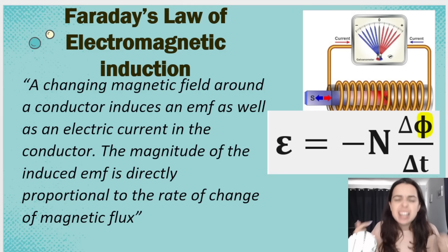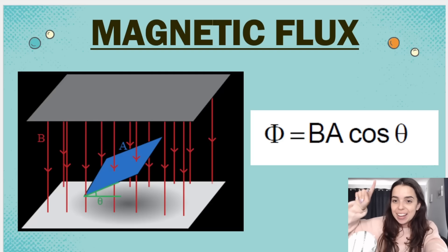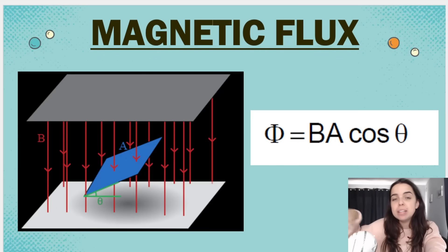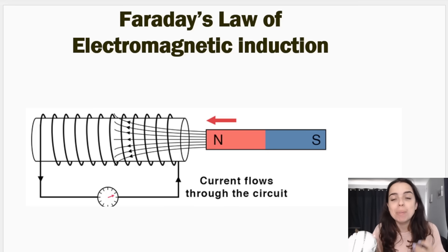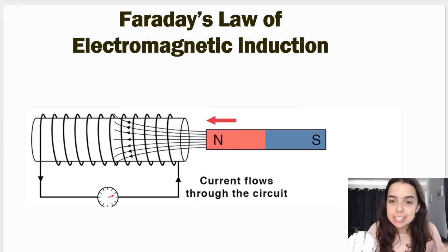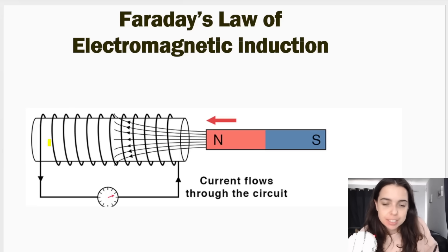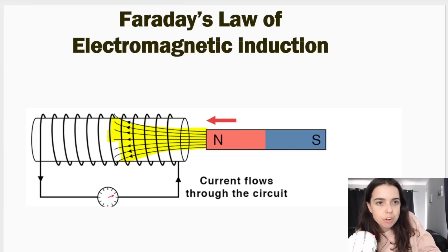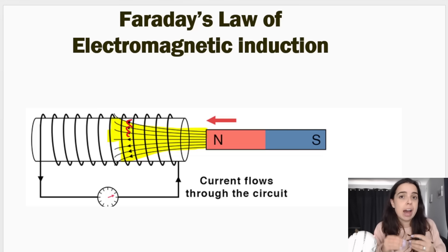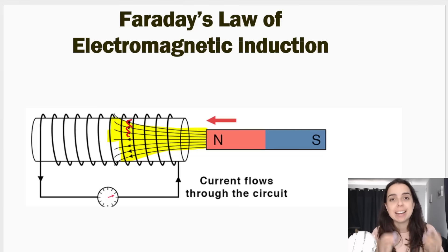So we will go over what magnetic flux is and how to calculate it, which will ultimately allow us to calculate induced EMF. First, the definition. If I have a bar magnet, a magnetic field exists around it. We can see these magnetic field lines, and you can see the arrows pointing away from the north pole. So remember, around a bar magnet we have a magnetic field represented by magnetic field lines.